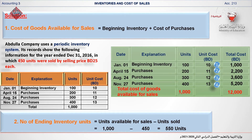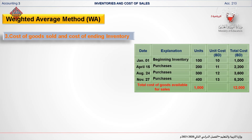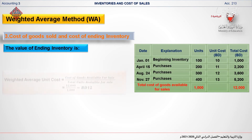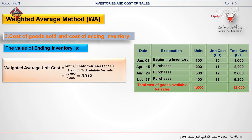In requirement number 3 you have to calculate the cost of goods sold and the cost of ending inventory. First you need to calculate the weighted average unit cost by applying this formula: cost of goods available for sale divided by total units available for sale. That is 12,000 divided by 1,000, and the weighted average unit cost is 12 BD.